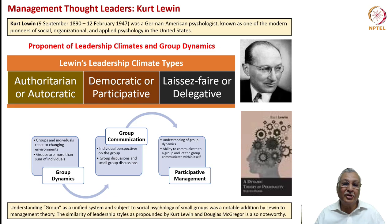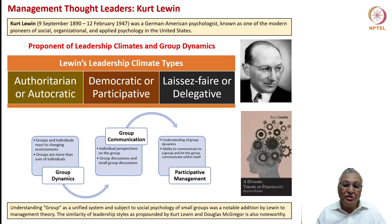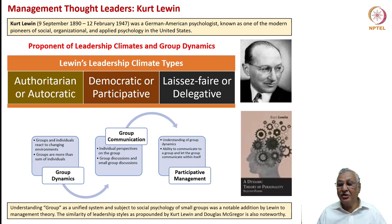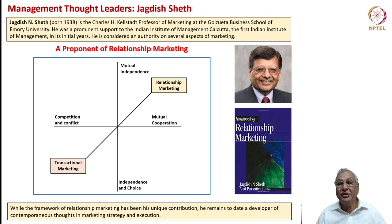Lewin advocated getting individual perspectives onto the group perspective, encouraging group and small group discussions. He said that participative or democratic management is the only way to understand group dynamics openly and transparently, and to have the ability to communicate to a group and let the group communicate with you. A group is not just a department nor a bunch of people — it is a unified system subject to the social psychology of its participants. This is closely related to McGregor's Theory X and Theory Y.